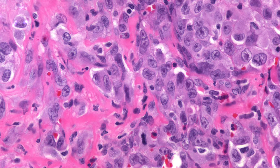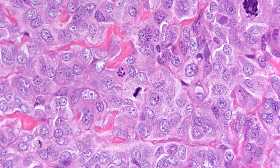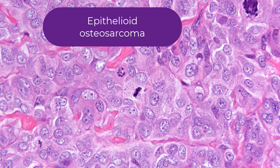Here's another epithelioid tumor, but this one looks far more malignant — this is an epithelioid angiosarcoma. You're not going to mistake this for a chondroblastoma given the obvious malignant features and mitotic activity. However, I bring this up because the great mimic in bone pathology is the epithelioid osteosarcoma.